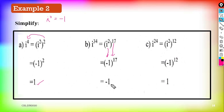The last one: i^24. As usual, we put i² into the bracket. 2 × 12 = 24, so i^24 = (i²)^12. Since i² = −1, we get (−1)^12. Since 12 is an even number, (−1)^12 = 1.